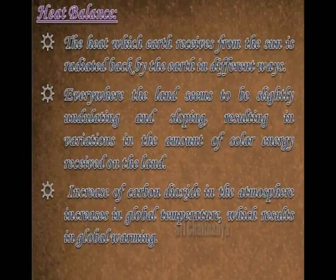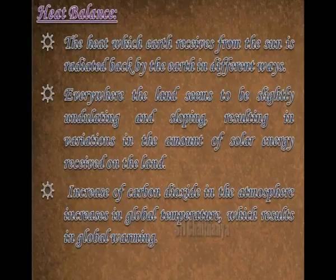Heat Balance: The heat which the Earth receives from the Sun is radiated back by the Earth in different ways. The land is slightly undulating and sloping everywhere, resulting in variations in the amount of solar energy received. An increase of carbon dioxide in the atmosphere increases global temperature, which results in global warming.